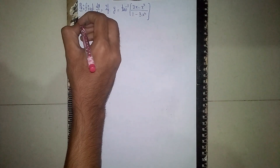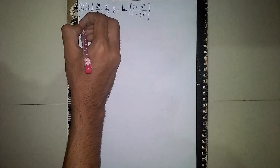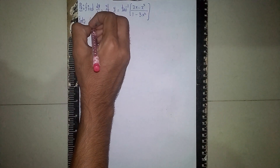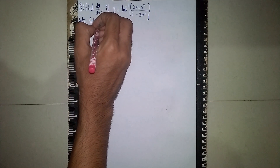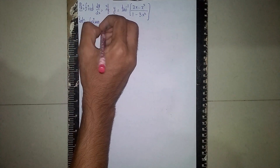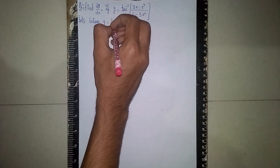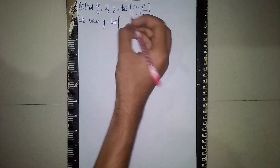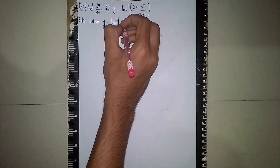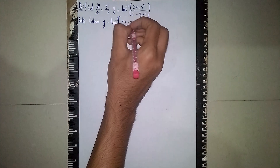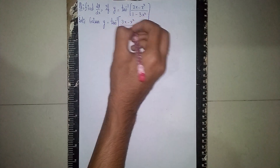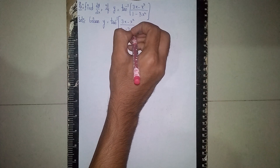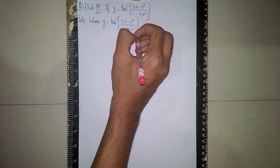So first I should write the solution. Given: y is equal to tan inverse of (3x minus x cubed) by (1 minus 3x squared). This is the given question.